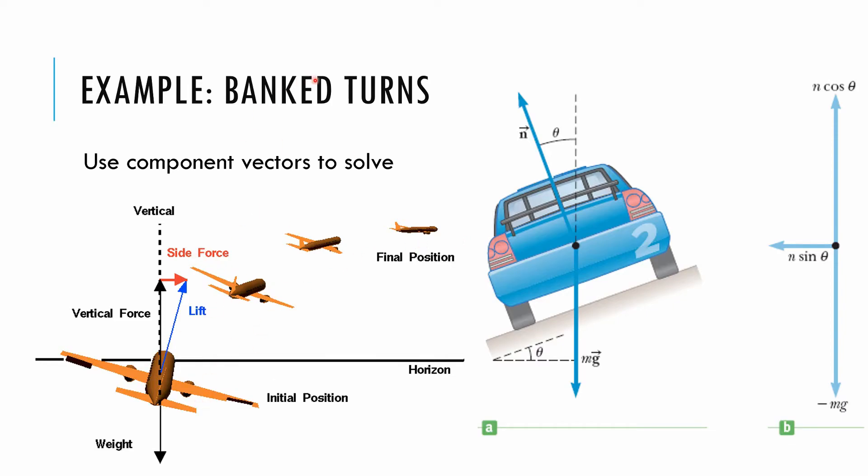So with banked turns, if you see them, you need to use component vectors like this. For the IB, that'll usually be more conceptual, and you kind of set this up. These can be a little time consuming to solve full on, so you usually don't see them in that way. They might be a paper one problem. You have to kind of identify the component vector or something like that.